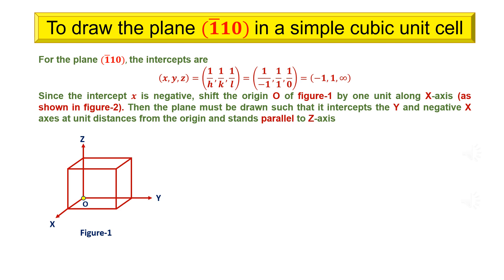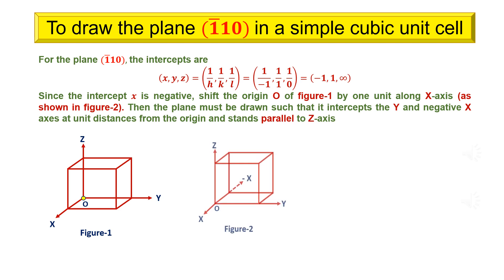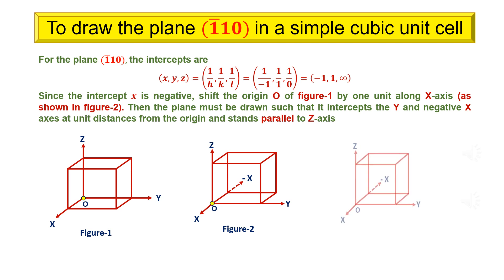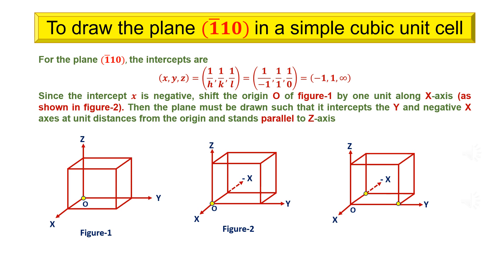For the plane (bar 1, 1, 0), the intercepts are x, y, z equals minus 1, 1, infinity. Since the intercept x is negative, shift the origin of figure 1 by 1 unit along x-axis, as shown in figure 2. Then the plane must be drawn such that it intercepts the y and negative x-axis at unit distances from the origin and stands parallel to z-axis.